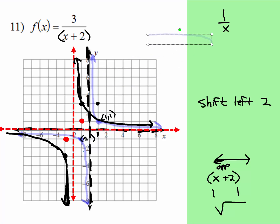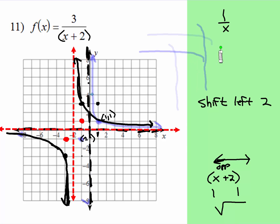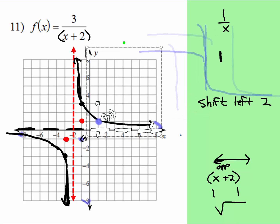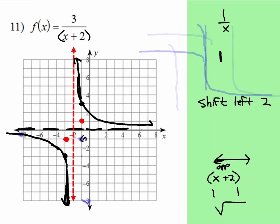I'm going to remove the parent graph so that you can actually see what's happening here, and I'm going to delete that original asymptote so it's not so confusing. And that's what the new graph would look like.